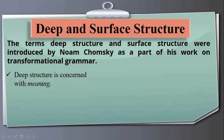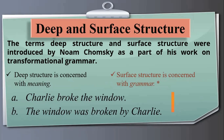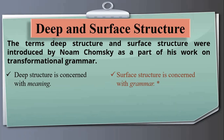Deep structure is concerned with meaning, while surface structure is concerned with grammar. For example, consider two sentences: 'Charlie broke the window' and 'The window was broken by Charlie.' These are two different sentences, but their meanings are the same — that is the deep structure. The difference lies in their grammatical structure, which is the surface structure.